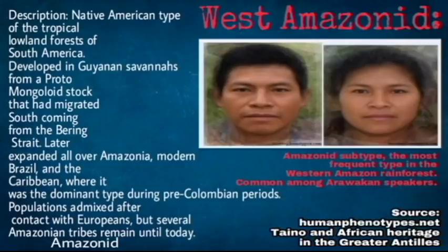This is very important to know. At the time of European arrival, when Columbus arrived in the Caribbean, this was the dominant type in the Antilles according to humanphenotypes.net. Populations admixed after contact with Europeans, but several Amazonian tribes remain today. The West Amazonoid is an Amazonoid subtype — the most frequent type in the Western Amazon rainforest, common among Arawak speakers. This is a rough estimate of how sub-Tainos and classic Tainos appeared, because they were mainly Arawak groups.